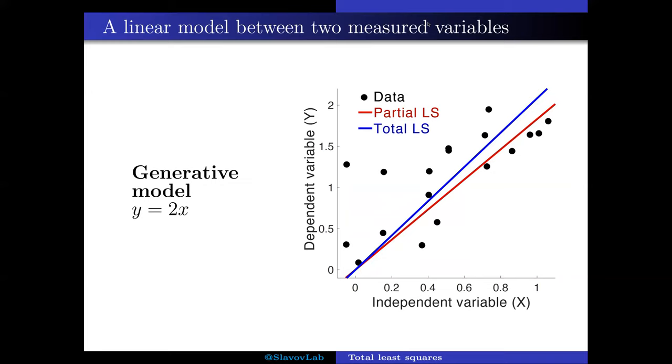For example, if X and Y are two different proteins, that would correspond to our error in measuring them, or if they are two different metabolites, or messenger RNAs,